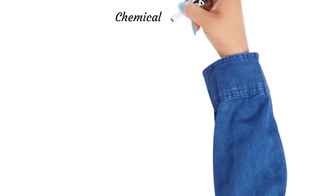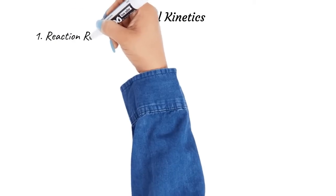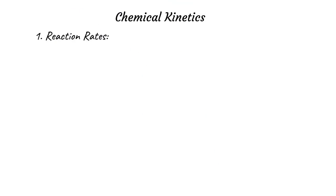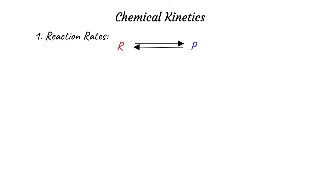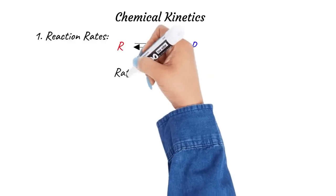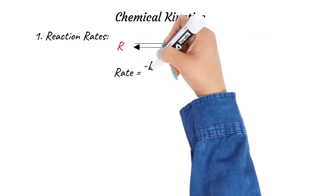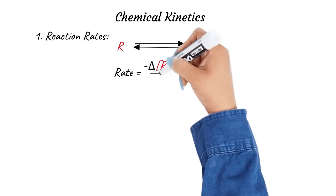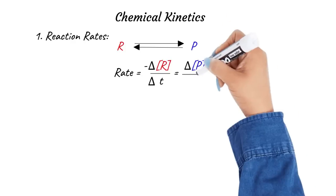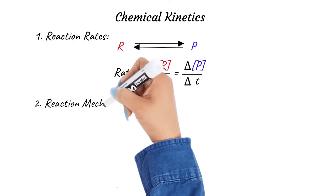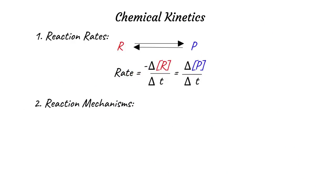Chemical kinetics is all about the rates of chemical reactions. During a chemical reaction, the reactant molecules collide with each other and transform into products. The rate of a chemical reaction is the change in concentrations of reactants or products over time. Chemical kinetics can be used to understand reaction mechanisms, or how chemical reactions occur.